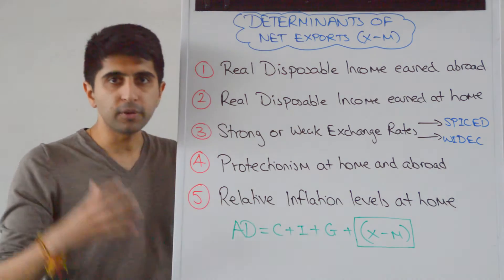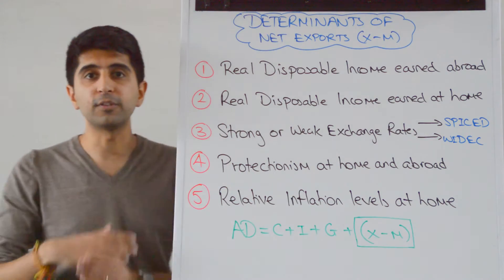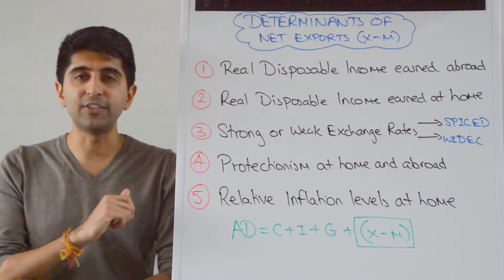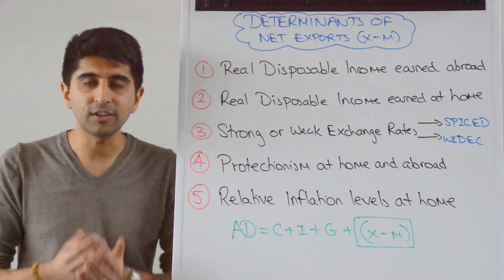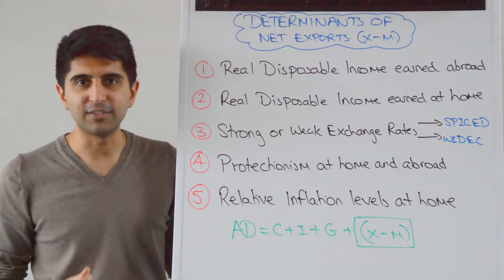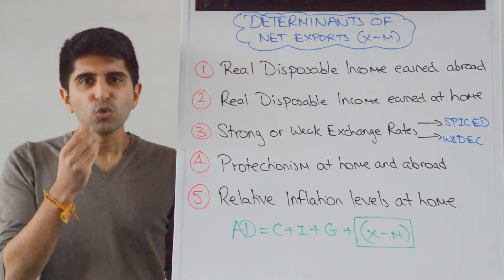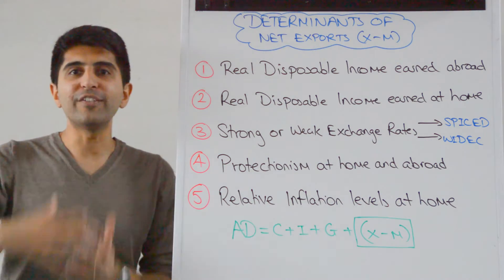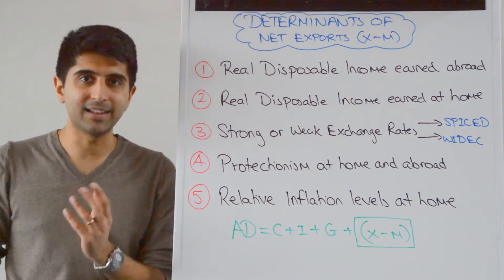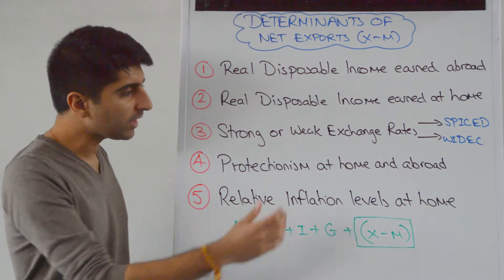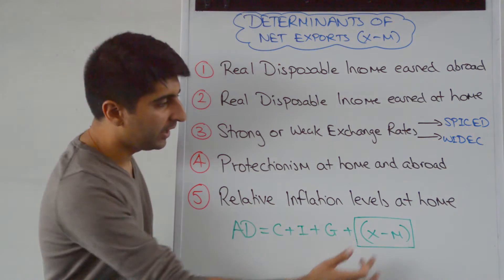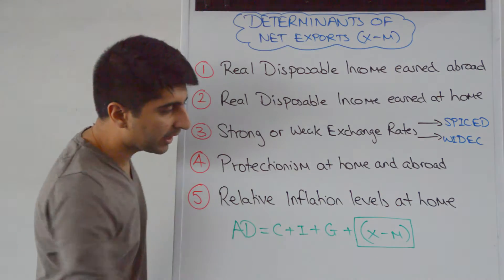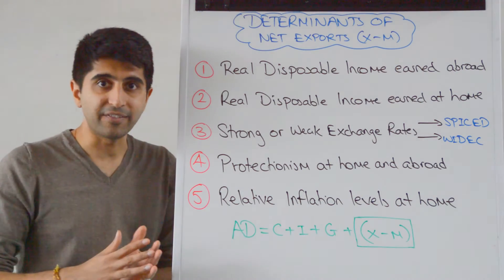Similarly, real disposable income earned at home. So if there is a boom in the UK, the marginal propensity to import in the UK is likely to rise. We call that the sucking in effect of imports — the sucking in of imports is likely to take place. And therefore our import expenditure is likely to rise. So that's going to increase M in the X minus M bracket, which is going to pull down the value of the bracket and shift AD to the left.